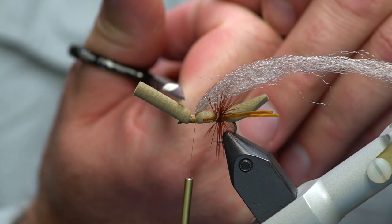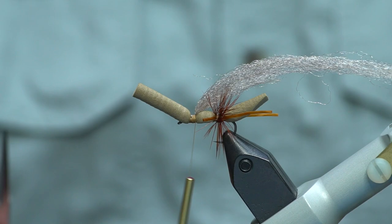And then I'm actually going to fold it back. So I started with half as much wing as I wanted to end up with. That way we don't have to trim any butts away.